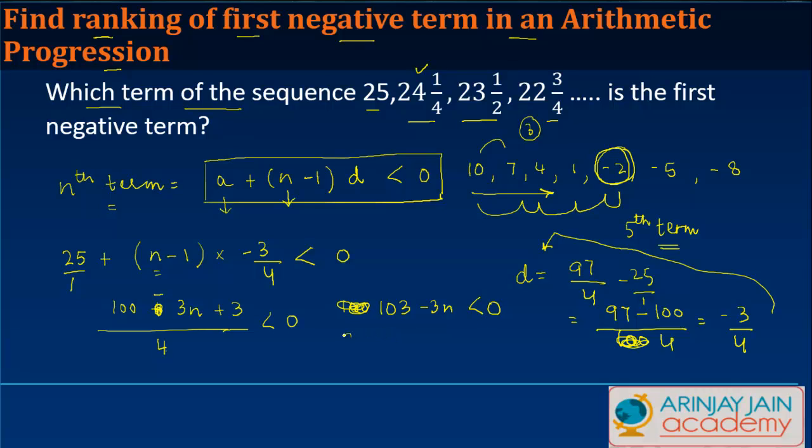Or n is greater than 103/3, which is going to give you 34⅓. So the nth term has to be greater than 34⅓, which means that it is the 35th term of this arithmetic progression which is going to be the first negative term in this sequence, because n is coming as greater than 34⅓.